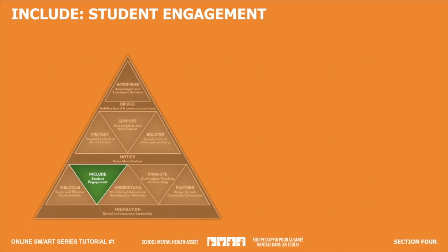This piece of the Tier 1 triangle speaks to including and engaging all students in school life. This involves providing instruction that optimizes the interests and talents of your students to enhance the learning experience for all. It can also include providing space for student voice and student leadership, particularly on topics related to mental health promotion — students are often eager to learn about mental health and to make a positive difference for their peers.